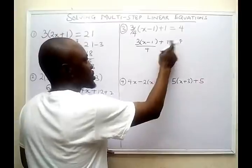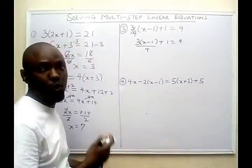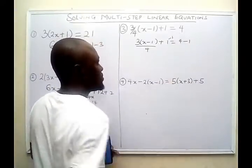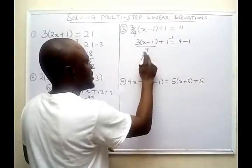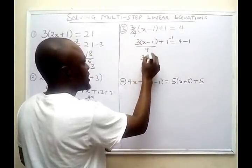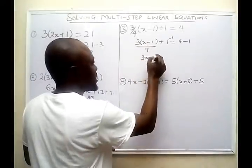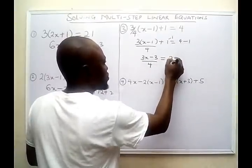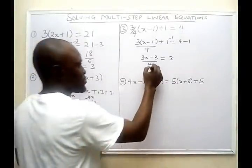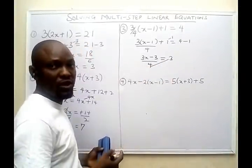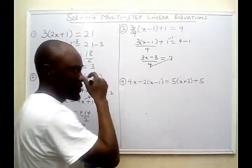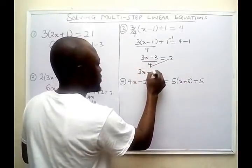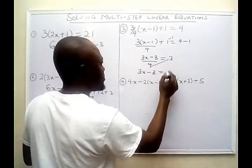The next thing to do is subtract 1 from both sides of the equation. 1 minus 1 gives 0, so my new expression becomes 3 times bracket (x minus 1) over 4 equals 3. Now I can open up the bracket: 3 times x is 3x, and 3 times minus 1 is minus 3, all over 4, equals 3. The next step is to cross multiply. My new expression becomes 3x minus 3 equals 4 times 3, which is 12.